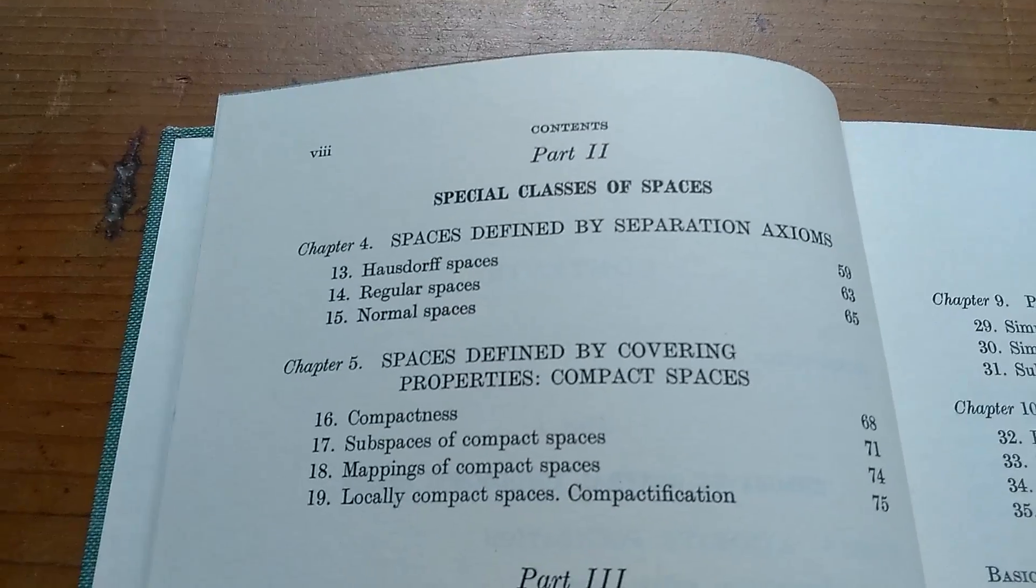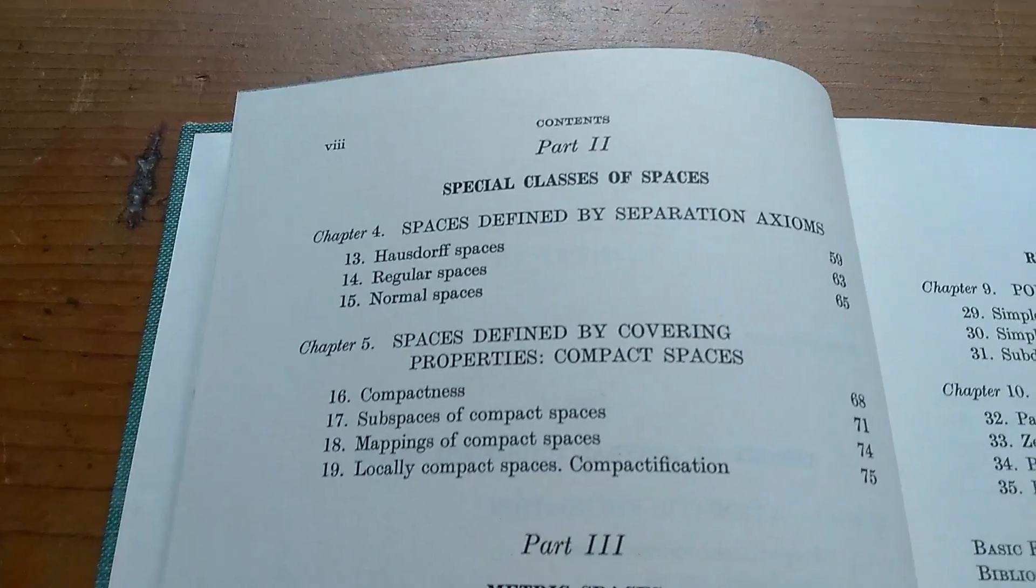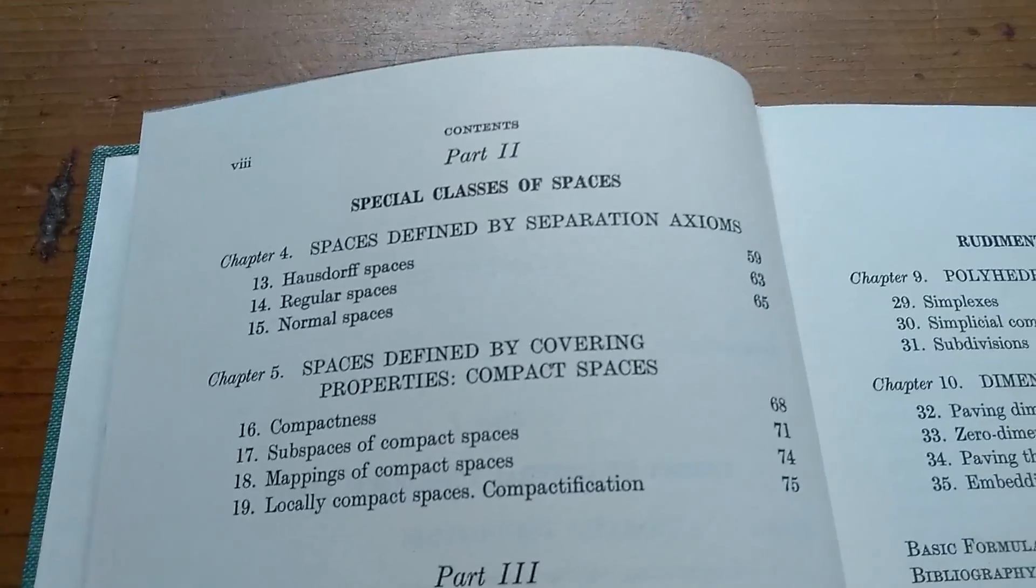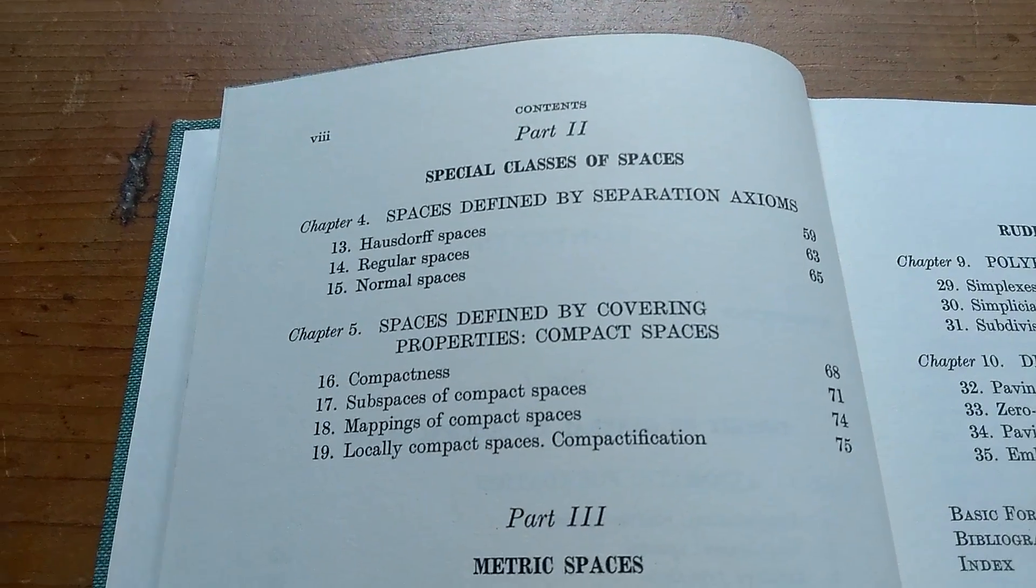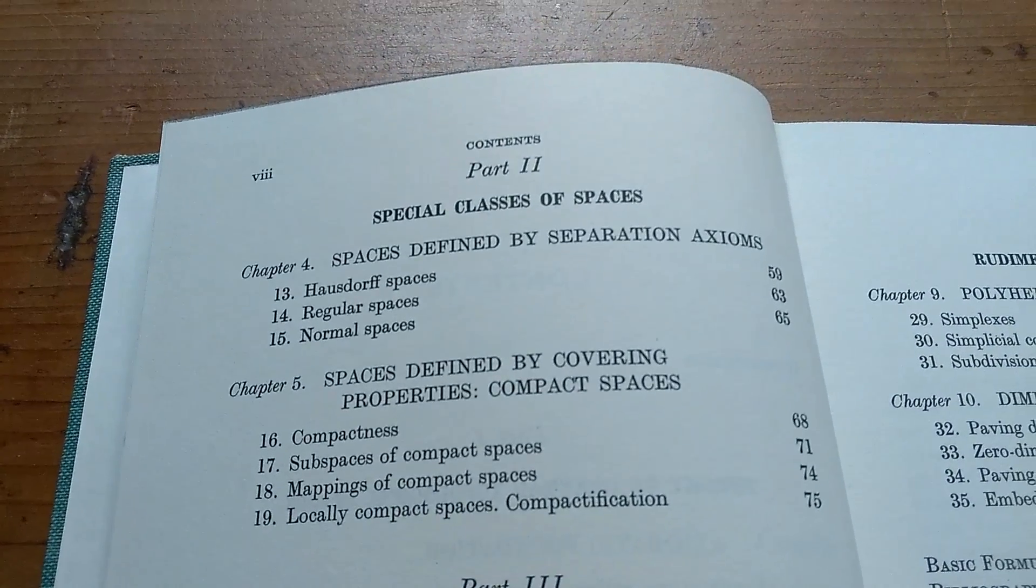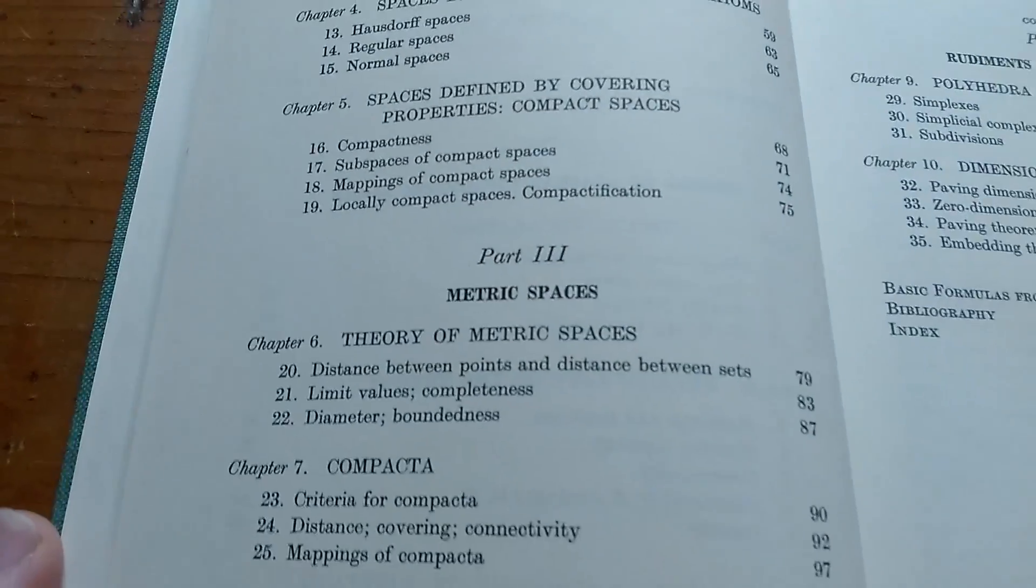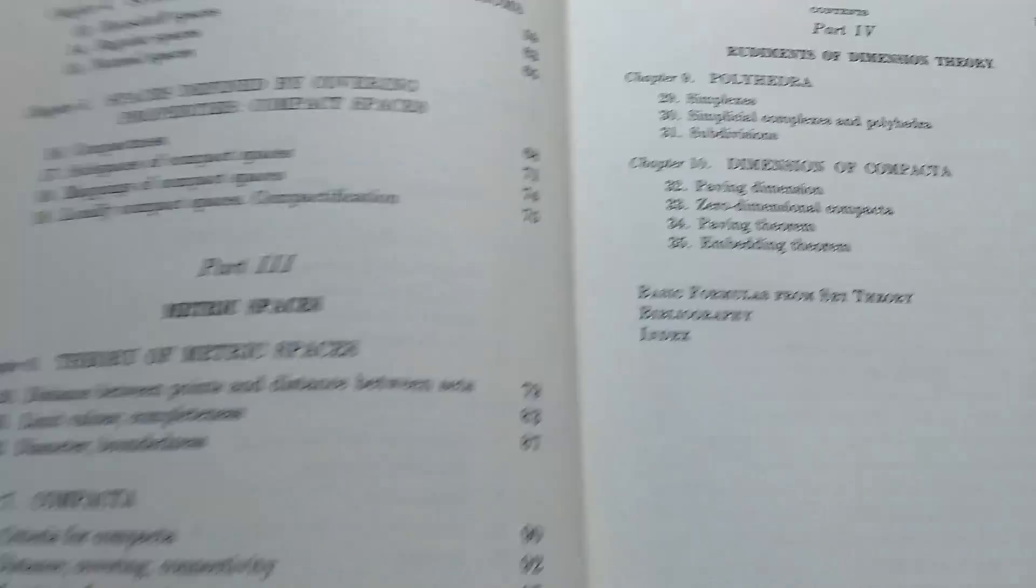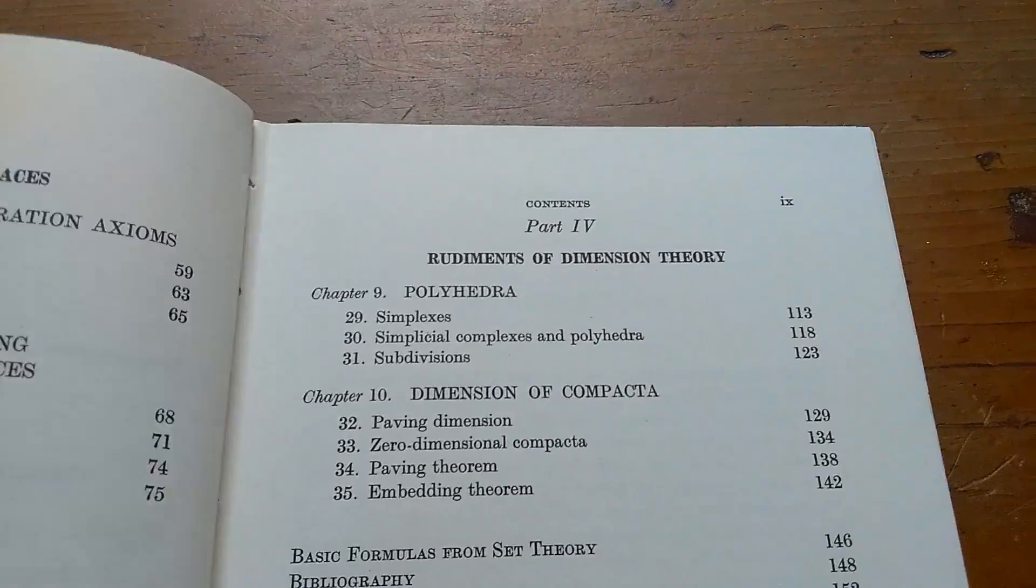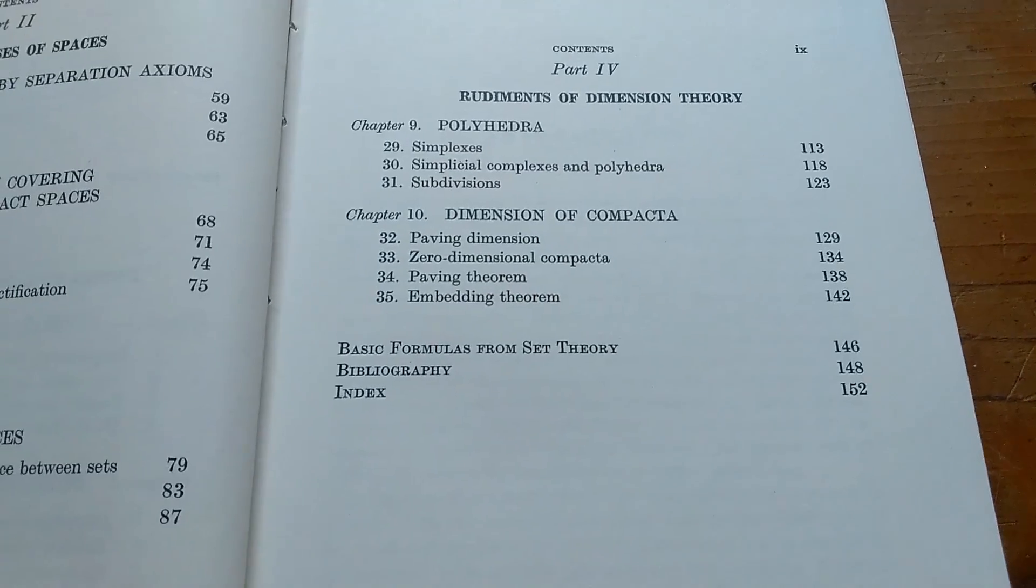So Hausdorff committed suicide, actually, around the same time that Wolfgang was practicing mathematics. Because he was going to be taken to a concentration camp. Really sad. Really crazy stuff during this time period for people and for mathematics in general.